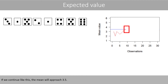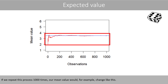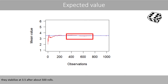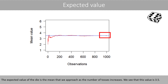If we continue like this, the mean will approach 3.5. If we repeat this process 1,000 times, our mean value would, for example, change like this. Although the mean values vary a lot in the beginning, they stabilize at 3.5 after about 500 rolls. The expected value of the die is the mean that we approach as the number of tosses increases. We see that this value is 3.5.